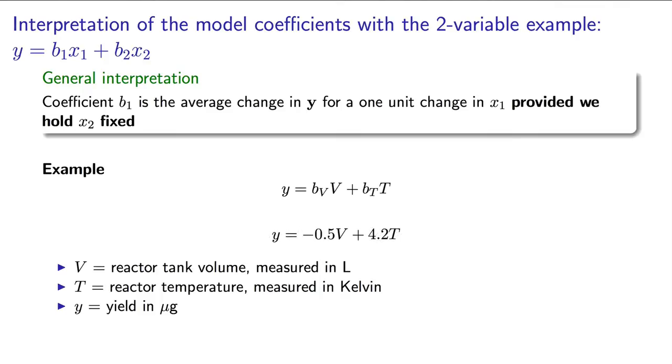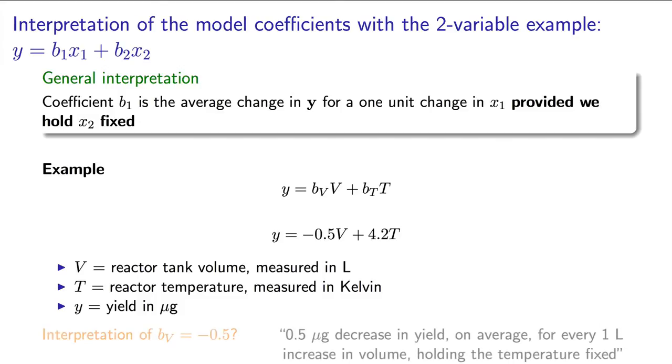Imagine that we measure the volume, V, in liters, and we find that that coefficient is minus 0.5. That negative coefficient of minus 0.5 indicates that the yield is expected to decrease, on average, by 0.5 micrograms for every one liter increase in the tank volume, holding temperature fixed.